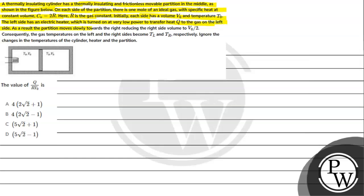As a result, the partition moves slowly towards the right, reducing the right side volume to V₀/2. Consequently, the gas temperature on the left and right side becomes TL and TR respectively. We ignore the change in temperature of the cylinder, heater, and the partition. We need to find the value of Q divided by RT₀.